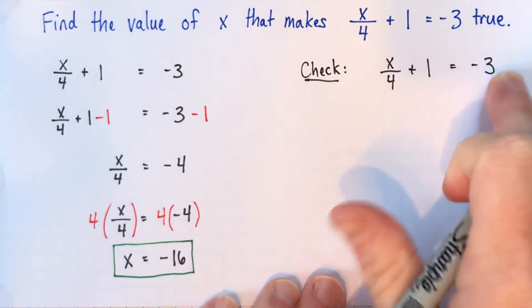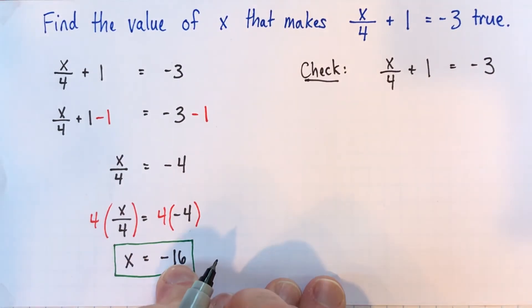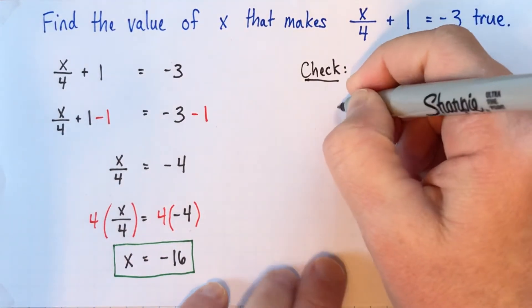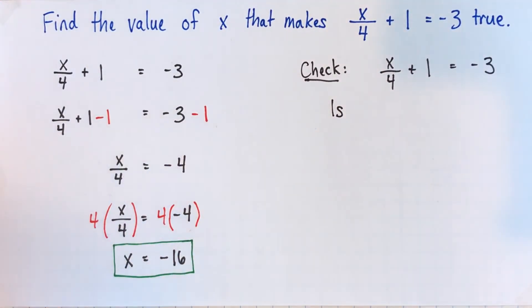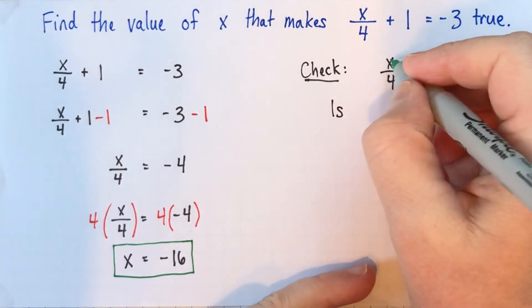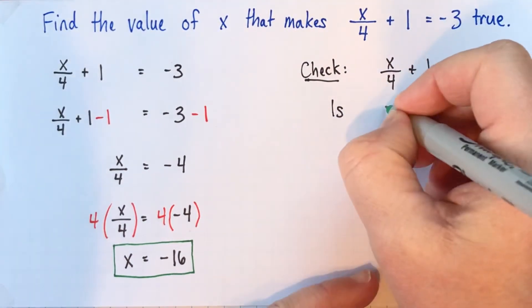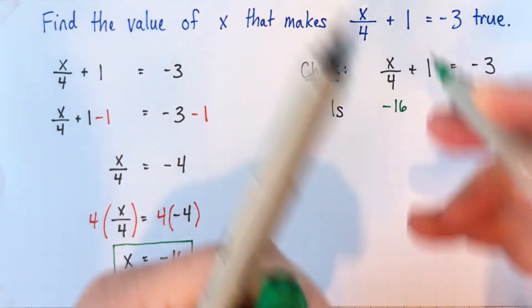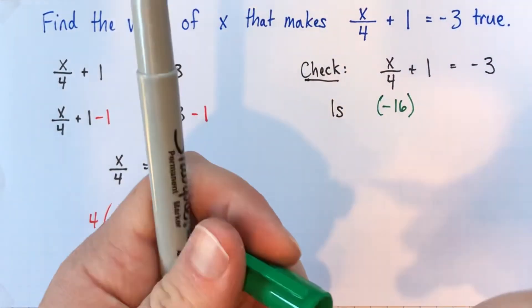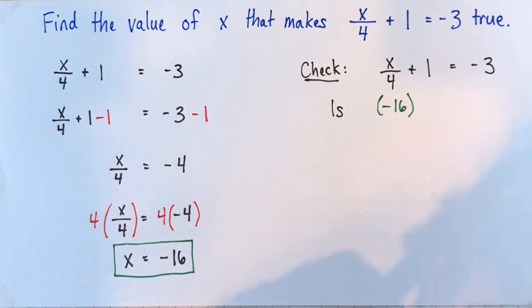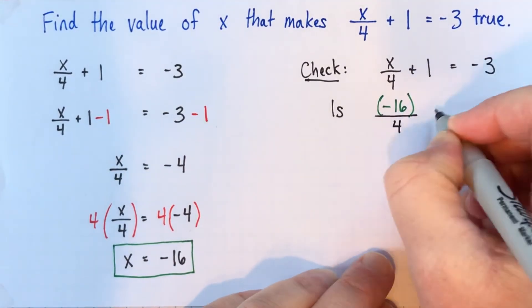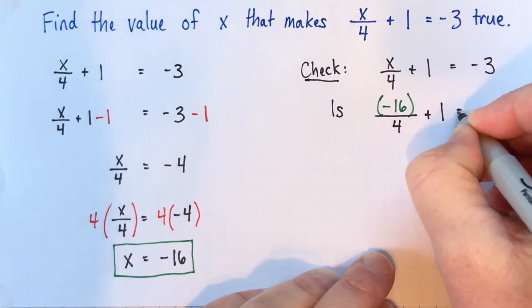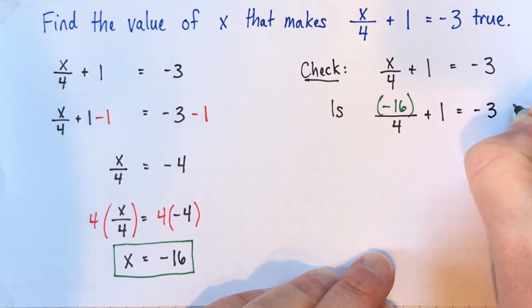So this is what we're going to do. We're going to write it as a question, so that anyone looking at our work knows we're just checking. We want to know, are they the same? And I'm going to replace my x with negative 16. Put that in brackets. So I've replaced the x with negative 16. So we're going to divide that by 4 and add 1. We want to know, is that the same as negative 3?